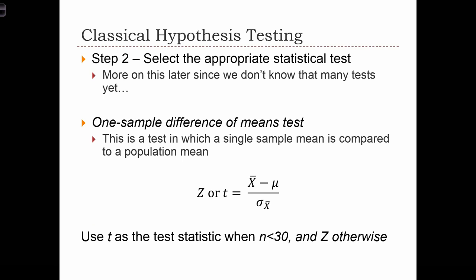Step two is to select the appropriate statistical test. We are going to have more tests to decide between later on. But for now, since this is the first hypothesis test that we're using, the test that we are going to be using is called a one sample difference of means test. This is a test in which a single sample mean is compared to a population mean. And look at how this test is formed. The test is either going to be a z-score or a t-score, and that, of course, is going to depend on whether or not our sample size is less than or greater than 30.